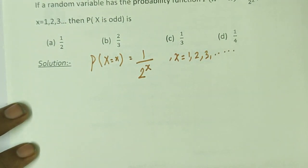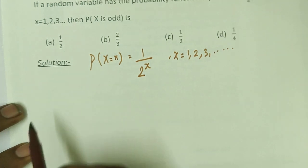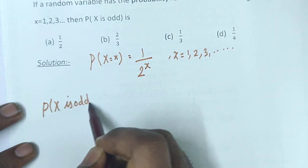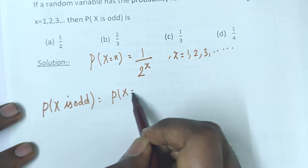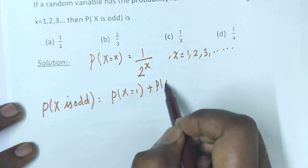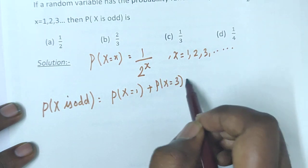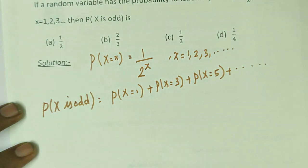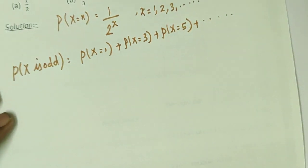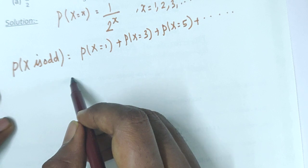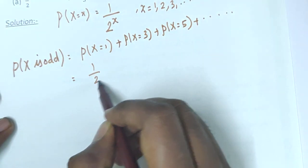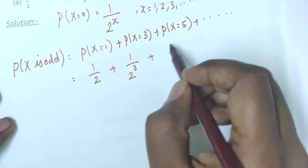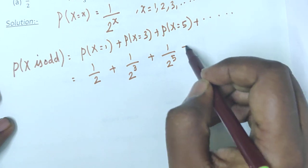If x is an odd value, then x = 1, 3, 5, and so on. So the probability that x is odd equals p(1) + p(3) + p(5) + ... which is (1/2)^1 + (1/2)^3 + (1/2)^5 + (1/2)^7 + ...